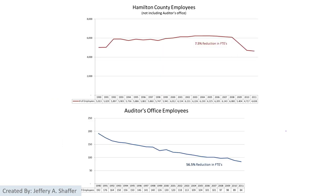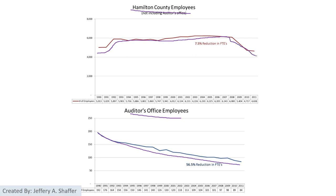We can redesign that bar chart by putting it into a line chart. We can see that for the Auditor's Office, there is a declining number of employees. And for the County Office, there was an increase, but also in recent years there is a steady declining.